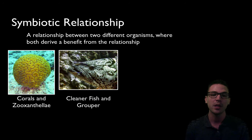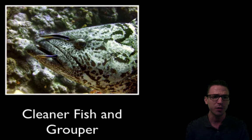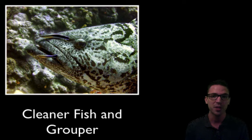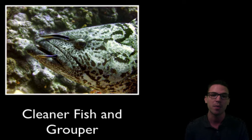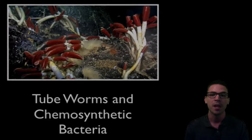Another example is cleaner fish and grouper. Cleaner fish, like the small purple wrasses shown here, pick off parasites, bacteria, and food from inside the teeth of the grouper. The cleaner fish get food, and in return the grouper gets cleaned — better dental hygiene and fewer parasites. Again, both organisms benefit from the relationship.